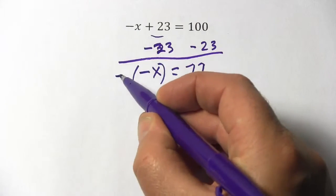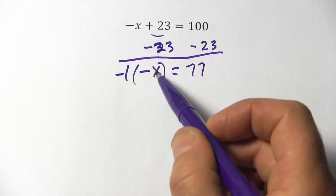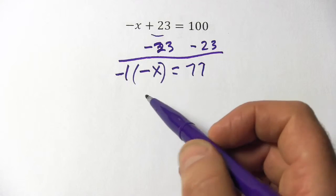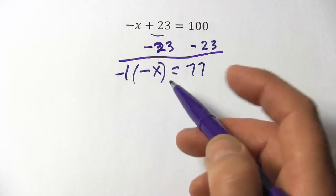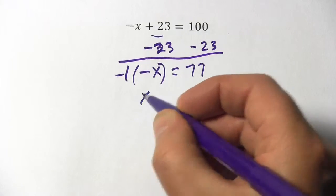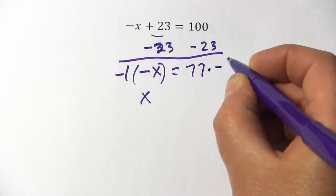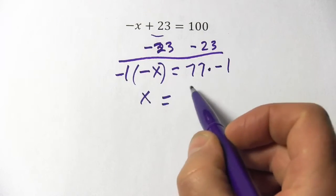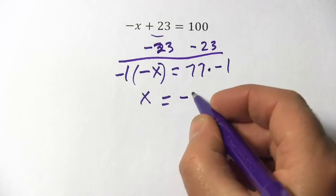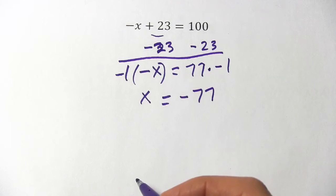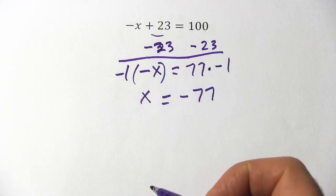So if I multiply this side by negative one, the one won't change anything, one times x is still x, a negative times a negative is a positive. Of course I have to multiply by a negative one over here as well. 77 times a negative one is negative 77, so x equals negative 77.